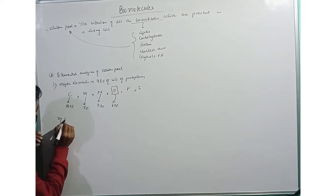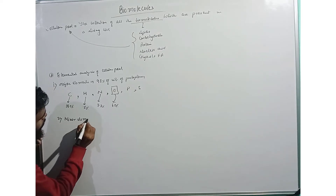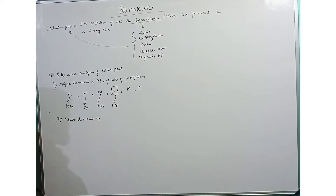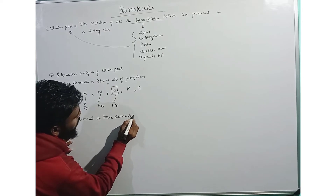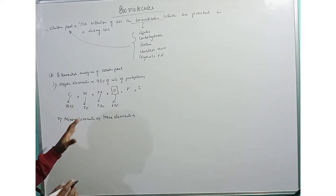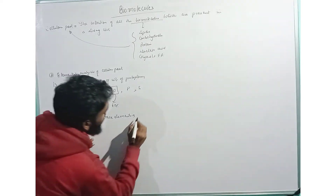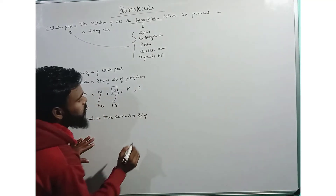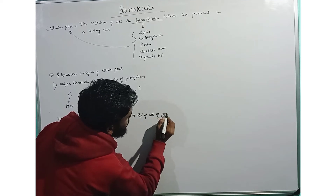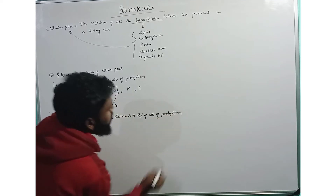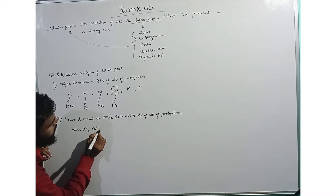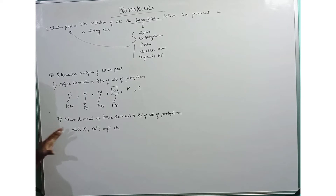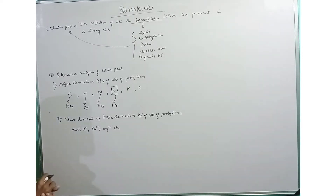The next category is minor elements, also called trace elements. They are called minor elements because they are present in very little amount, contributing about 2 percent of the rest of protoplasm. Examples include sodium (Na⁺), potassium (K⁺), calcium (Ca²⁺), magnesium (Mg²⁺), and other charged ions found as minor elements.